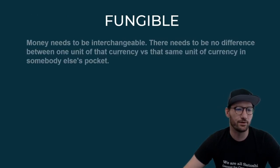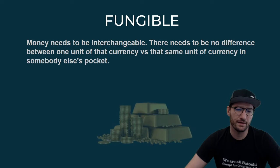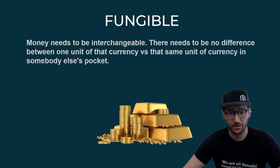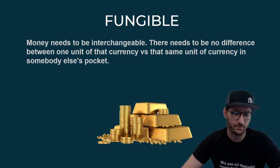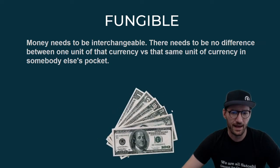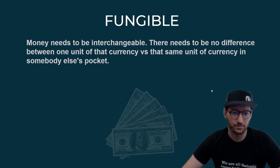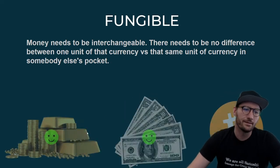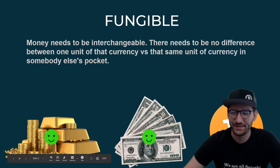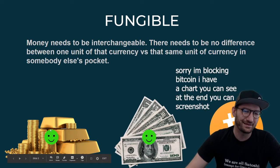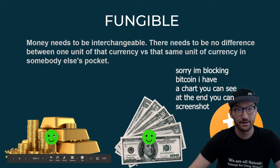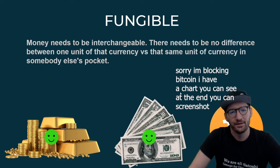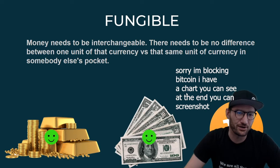So I'm going to go over each one of these things really quickly. First of all, fungible — the same dollar in my pocket needs to be the same dollar in yours. Very much so with gold, a gram of gold is the same as a gram of gold in mine. Cash — a dollar in your pocket is worth the same as a dollar in my pocket. Bitcoin, same thing — one Bitcoin in yours is worth one Bitcoin in mine. So I gave it all the green happy face. I did green for good, yellow for needs improvement, and red unhappy faces for bad — it's my little ranking system and I have a little chart at the end.